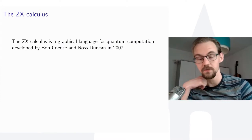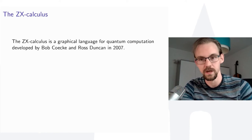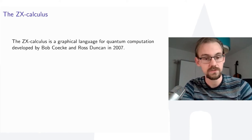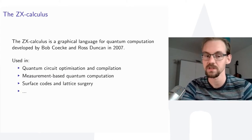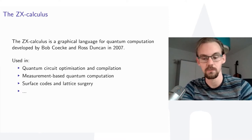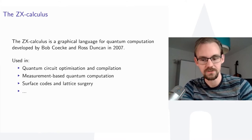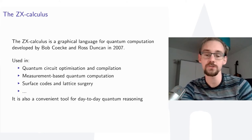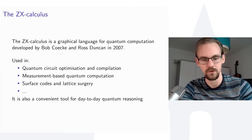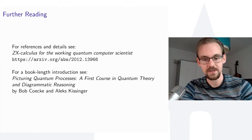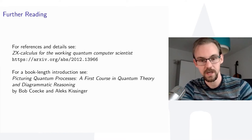The ZX calculus is a graphical language for describing quantum computations, developed in 2007 by Bob Coecke and Ross Duncan, who is also here at this conference. It has been used in quantum circuit optimization, compilation, measurement-based quantum computation, describing surface codes and lattice surgery, quantum foundations, tensor networks, and more. I wrote a review article on ZX — if you're interested after this talk, you can check out that paper.